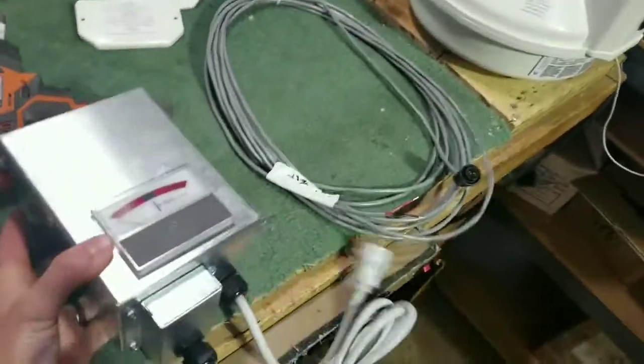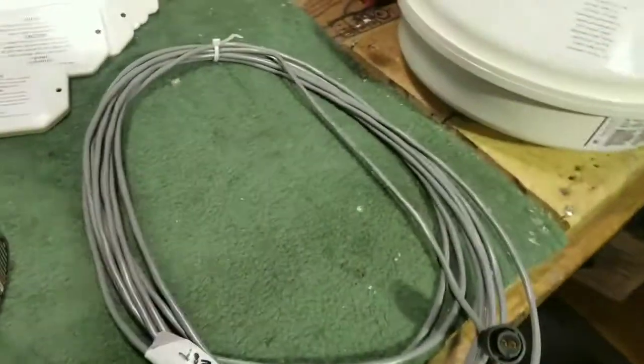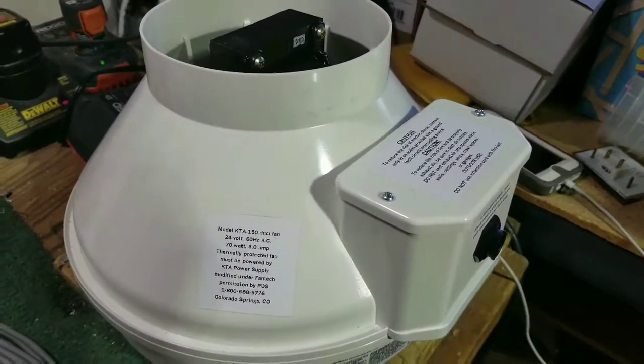Here on the left we have our meter indicator box, the KTA box as we call it. We've got 25 feet of cord. You can also get 50 and 100 foot varieties, and then we have the KTA fan.